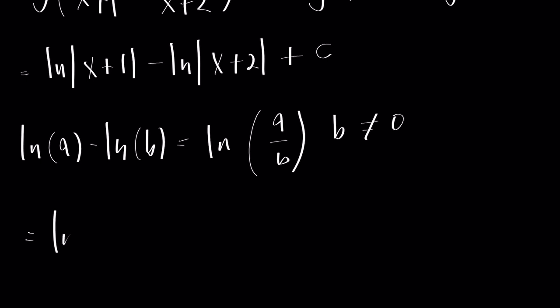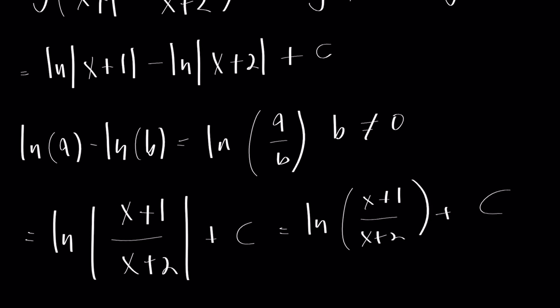So this is equal to the natural log of x plus 1 over x plus 2 plus c. And we could get rid of the absolute value signs because it will always be positive. So you have the natural log of x plus 1 over x plus 2 plus c. And this is the final result.